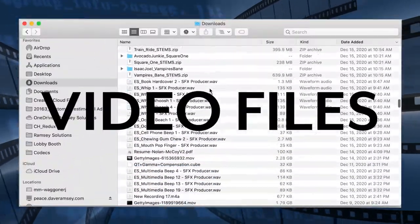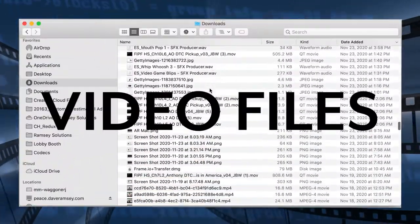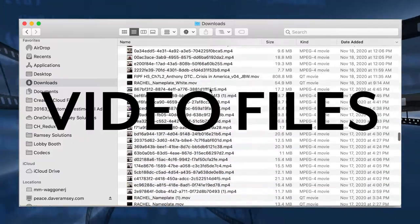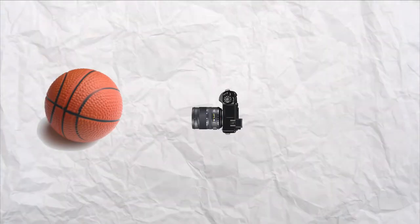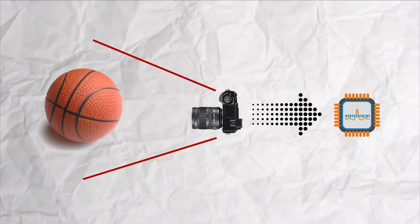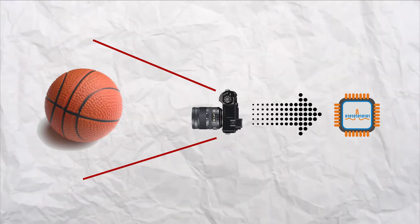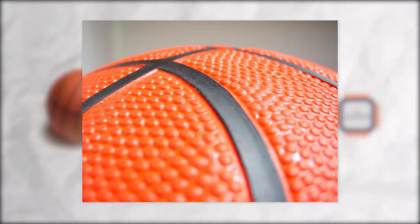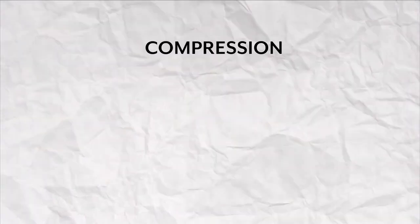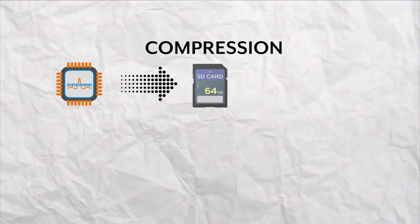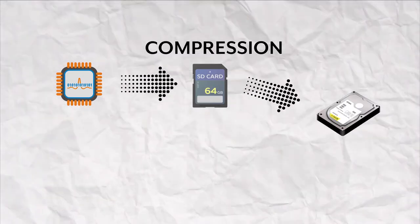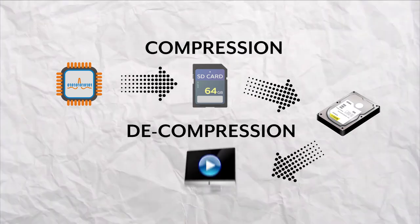Video files can be complicated, but there are some basics you can learn to help yourself out. The biggest thing to understand is when a camera captures an image to its sensor, from that moment on it is no longer 100% pure details anymore. It's automatically compressed to some degree, no matter what fancy name the camera manufacturers call it. A camera uses compression to get from the sensor to the media card, then to your hard drive, and then it uses decompression to play it back — aka codec.